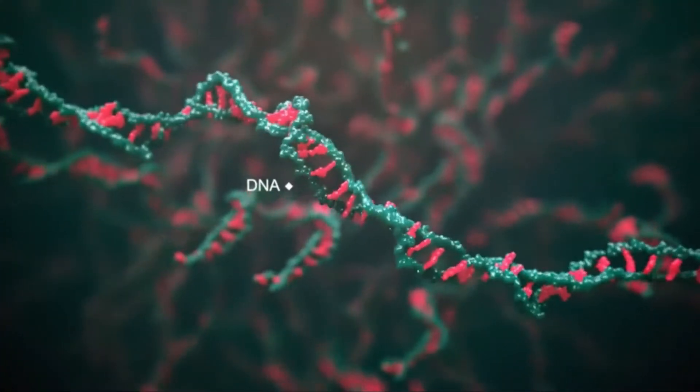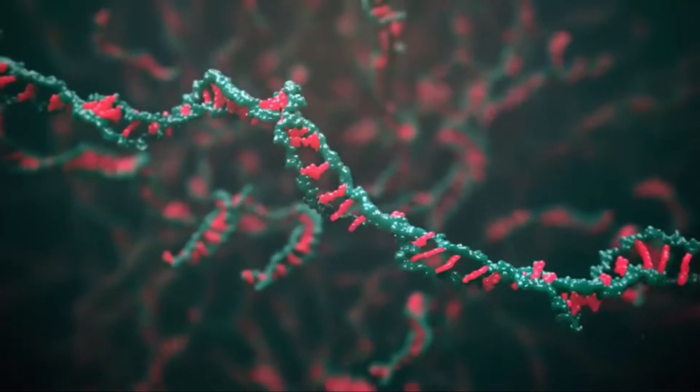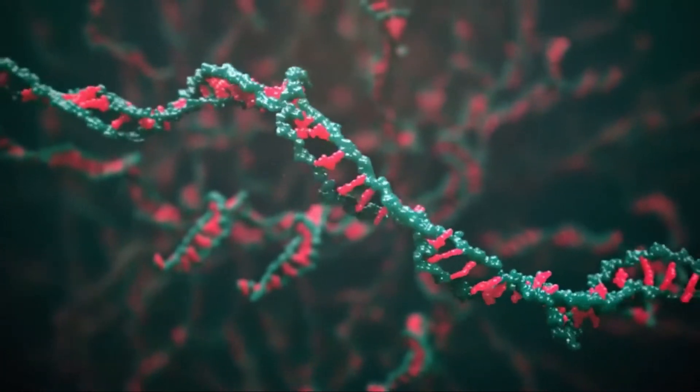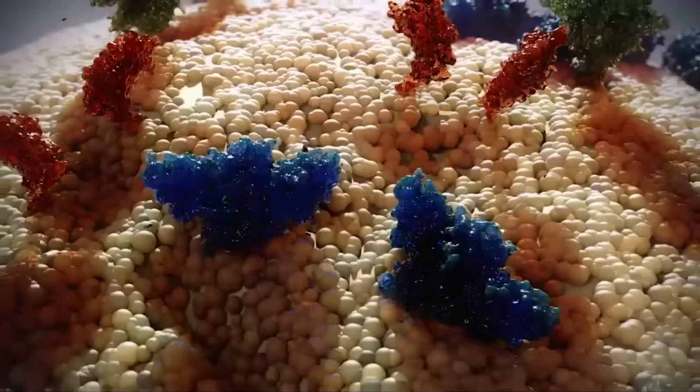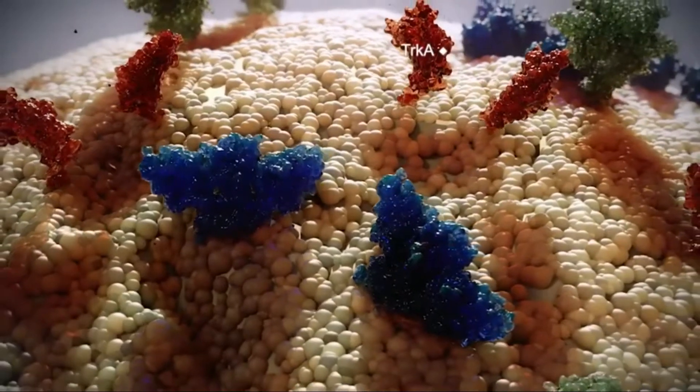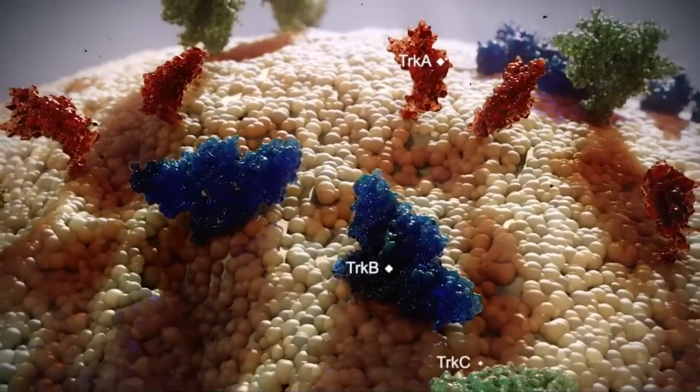Neurotrophic tyrosine receptor kinases NTRK 1, 2, and 3 are a family of genes that encode proteins called TRK A, TRK B, and TRK C, respectively.